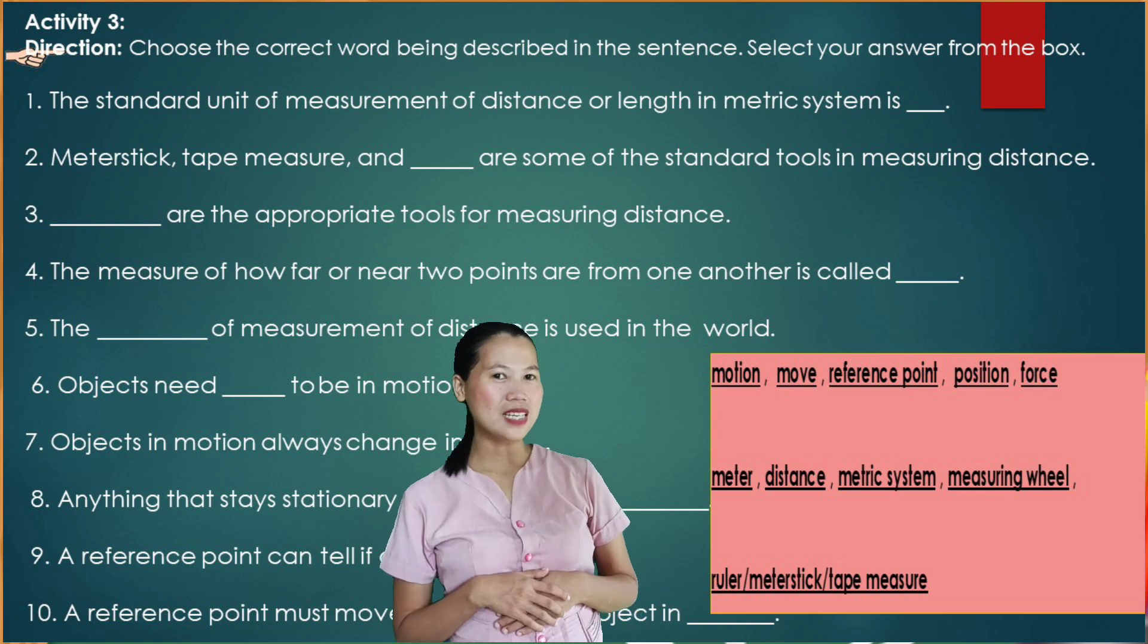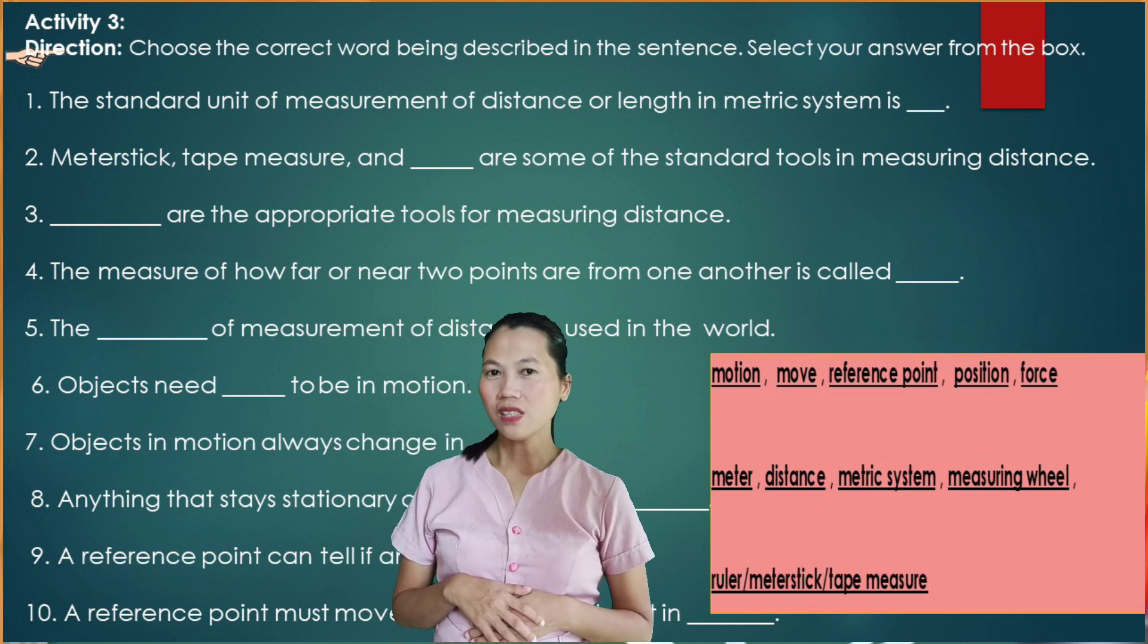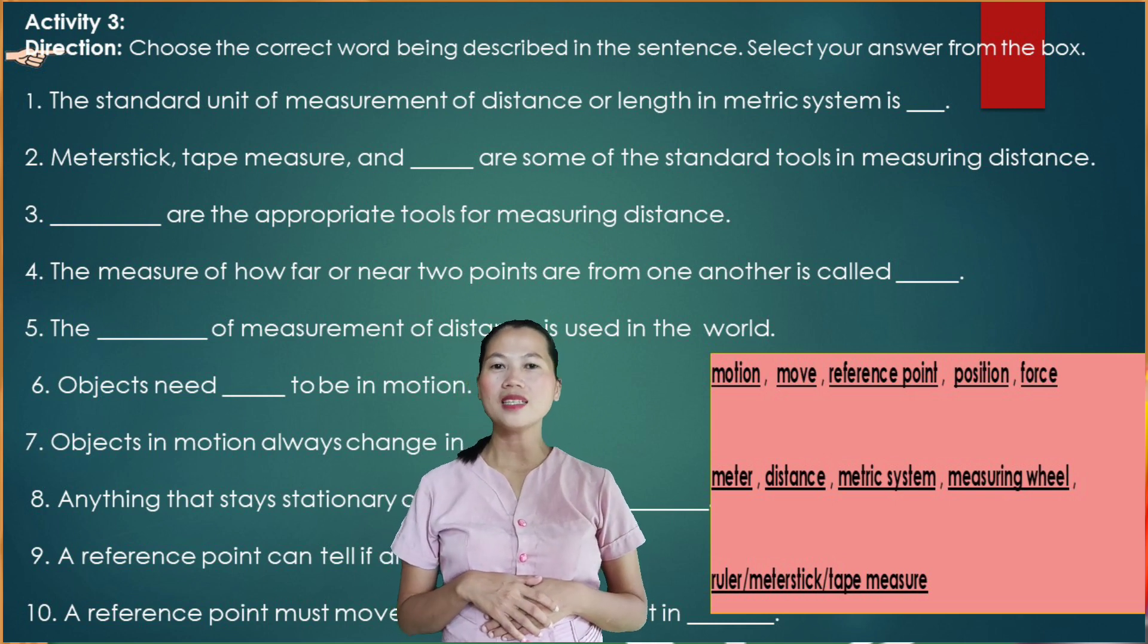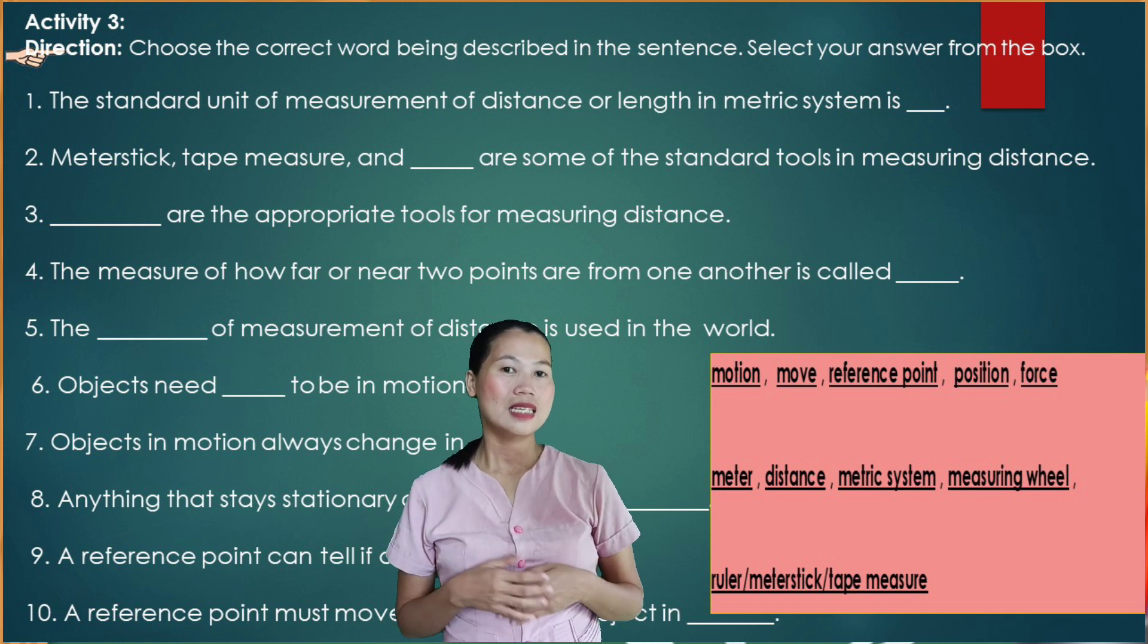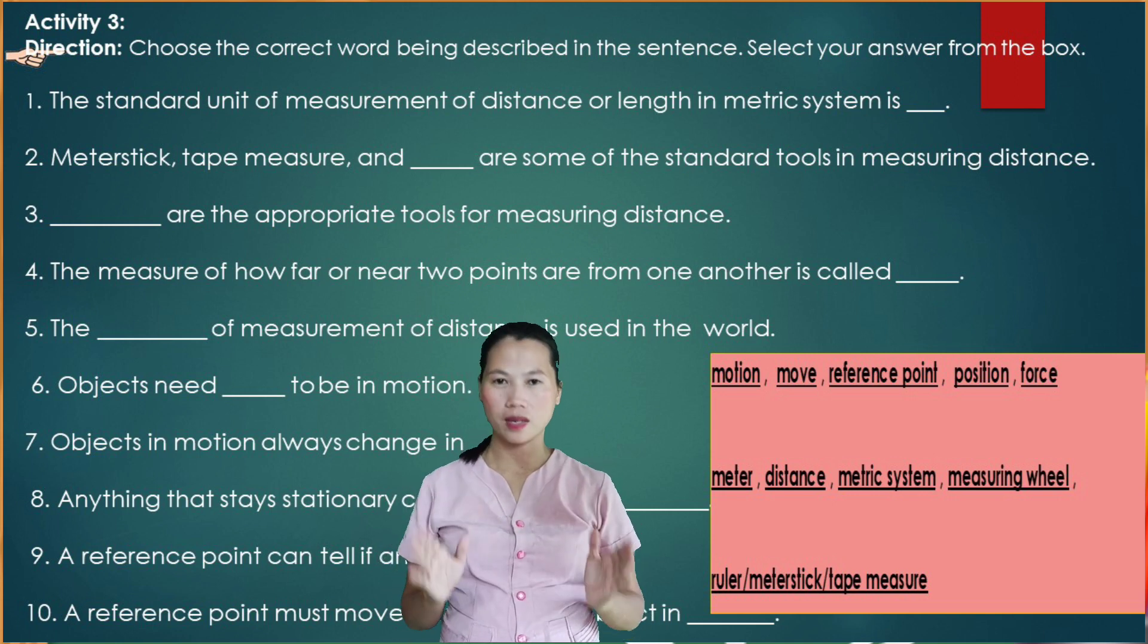For activity three, direction: choose the correct word being described in a sentence. Select your answer from the box.